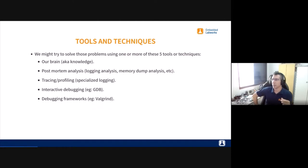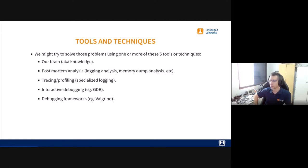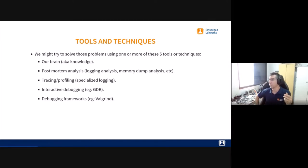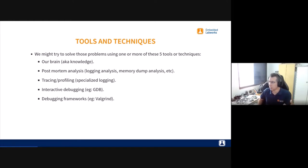I also came up with five different tools and techniques to debug those kinds of problems. The first one is our brain — it's probably the most important tool we have. We need to think about a problem, think about different ways the problem could happen. Technical knowledge is also important — for example, to understand what a segmentation fault is, we need to understand why it happens because of the isolation of memory provided by the MMU.